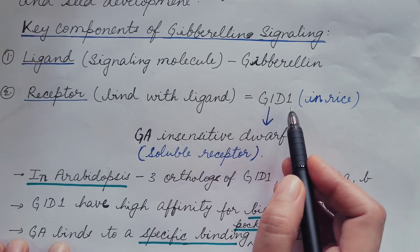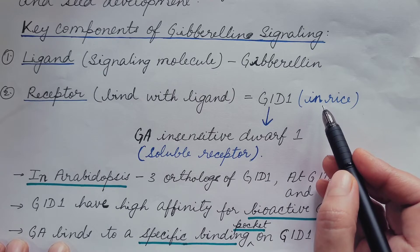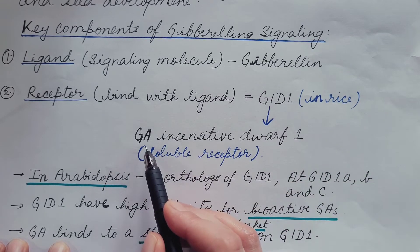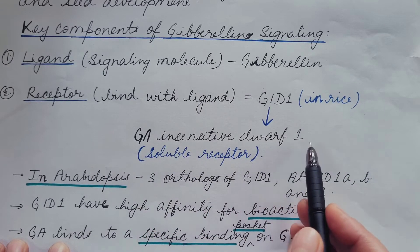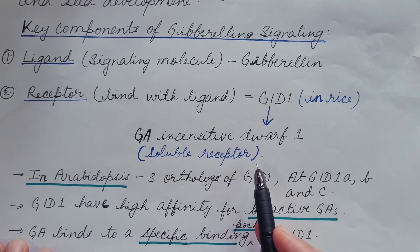Second is receptor which binds with ligand. Example: GID1. It was first identified in rice and the full form is GA insensitive dwarf 1. It is a soluble receptor.